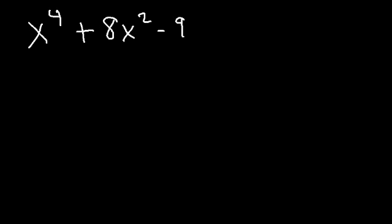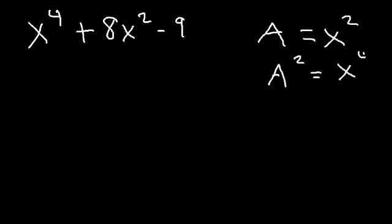You can use factoring by substitution. Let's replace x squared with a variable, let's say a. If a is x squared, that means that a squared is equal to x to the fourth.